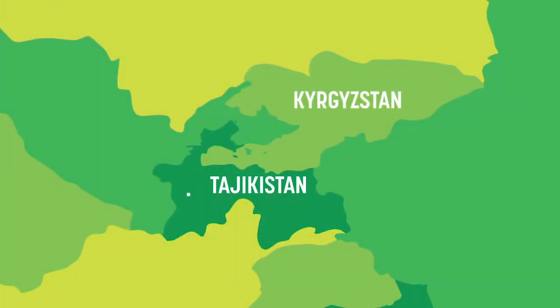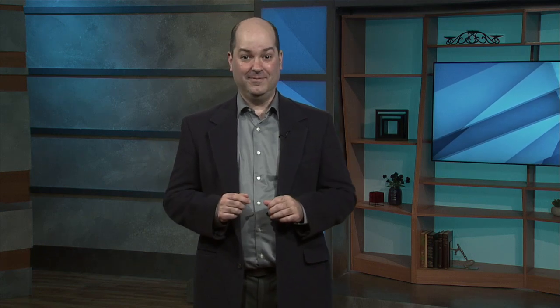Kyrgyzia is the former name of the small country today known as Kyrgyzstan. Dushanbe is actually the capital city of the neighboring country of Tajikistan. Therefore, Dushanbe is not in Kyrgyzia. I deliberately left the puzzle essentially as Boolos stated it, as an illustration of the sense of humor of some academics. As we'll see, Boolos is about to establish the principle that if we know we're not speaking to Random, and if the gods answer in English, then we can ask a single question of the gods to determine whether or not any particular factual assertion is true. A normal person might use something simple like one plus one equals two, but Boolos instead amused himself by picking something incredibly obscure.